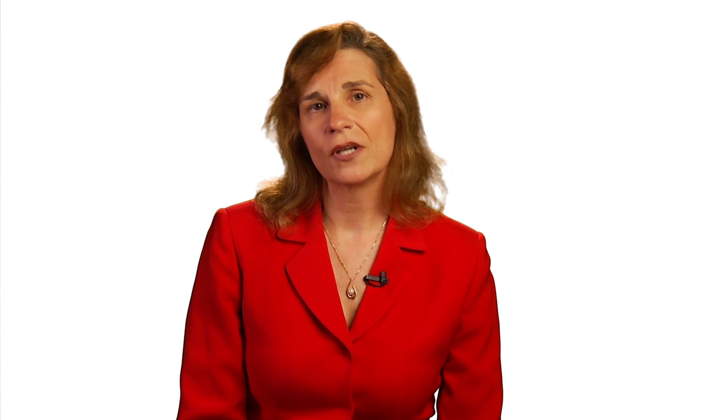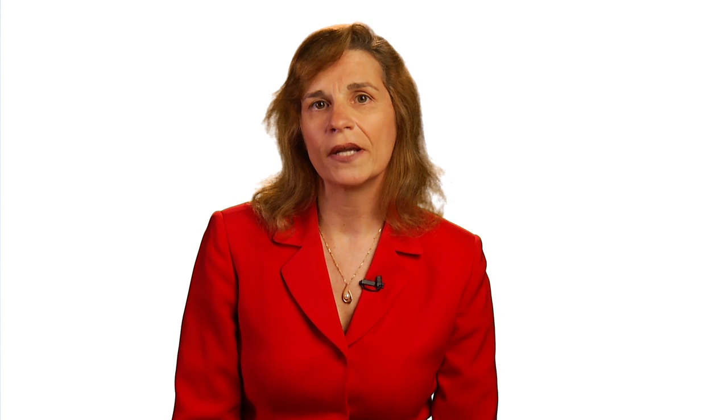The part of the project I'm going to be talking about is called the Systems Approach to Bioremediation. I want to tell you about the laboratory themes we follow in my lab. All of the work we do deals with use of naturally occurring microorganisms to biodegrade environmental contaminants. We apply molecular and isotopic tools to quantify bioremediation and to quantify microbial communities involved in bioremediation. We also focus on the biodegradation of emerging contaminants — contaminants that have recently emerged because of new analytical techniques or new types of contamination not previously considered.